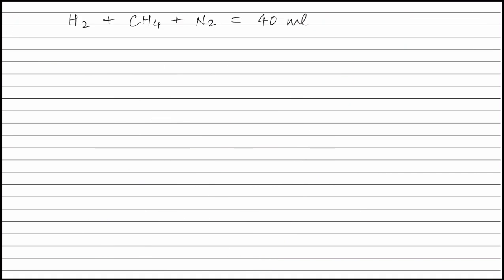We know that volume of hydrogen plus volume of methane plus volume of nitrogen is equal to 40 ml. Putting the values: volume of hydrogen plus volume of methane that is 3 ml plus volume of nitrogen that is 32 ml is equal to 40 ml. We get volume of hydrogen equals 5 ml.